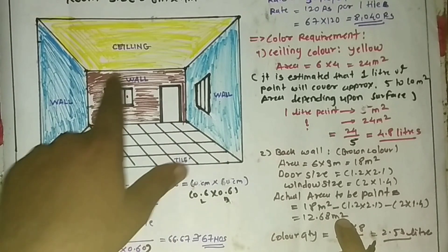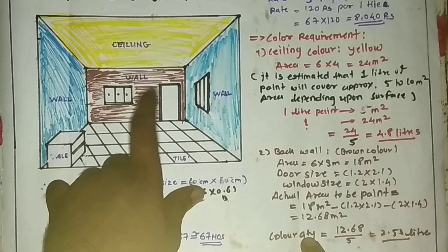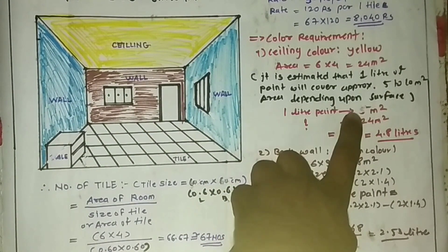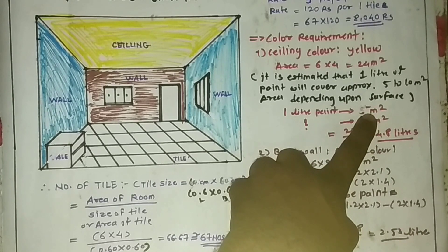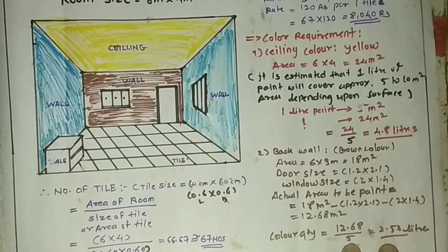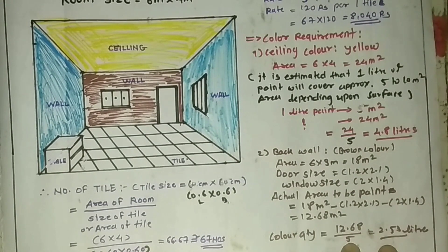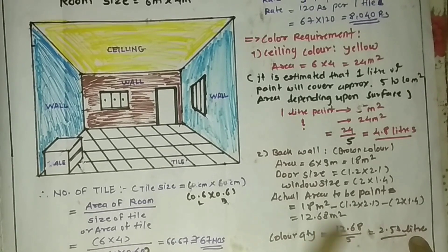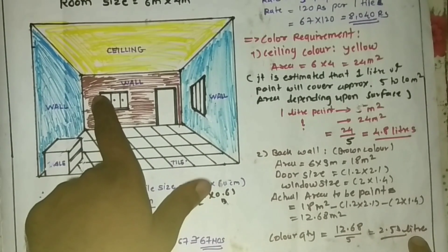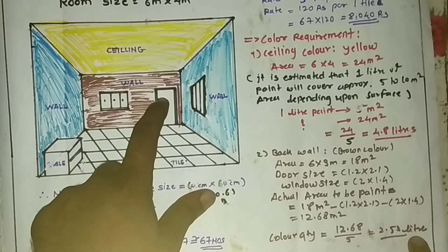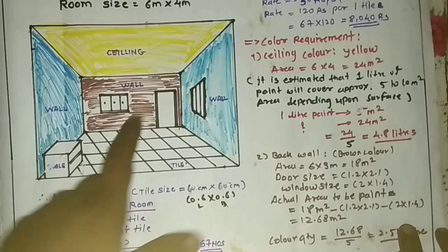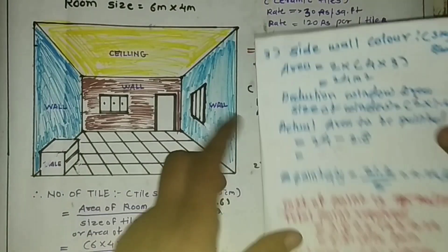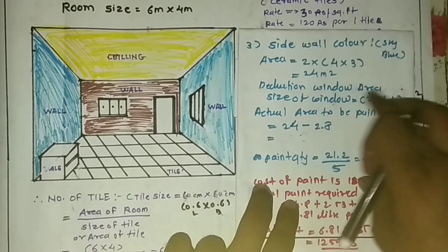For the back wall, the actual paintable area is 12.68 square meters. Assuming 1 liter covers 5 square meters, I divide by 5: 12.68 ÷ 5 = 2.53 liters of paint required to paint this back wall after deducting the door and window.